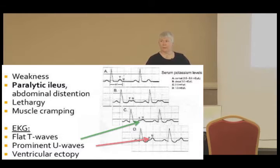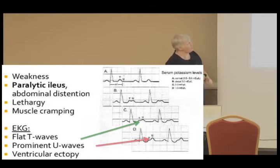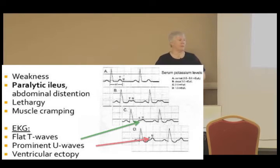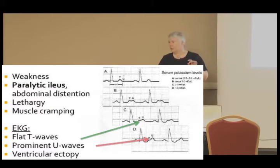Have you heard of the U wave? When you look at the first waveform, you see a little bump right after the T wave — that U wave is normal. We expect to see a possible little bump there. It's thought to be the repolarization of either the Purkinje fibers or the papillary muscle. That's what we think causes the U wave.